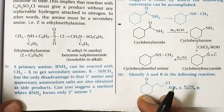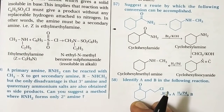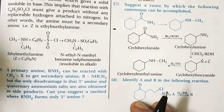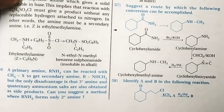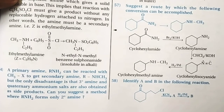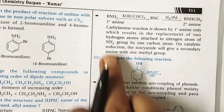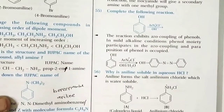Question 54: A primary amine RNH2 reacts with CH3X to give secondary amines RNHCH3, but the disadvantage is that tertiary amines and quaternary ammonium salts are also obtained as side products. To get only secondary amines, primary amines can react with chloroform in the presence of alcoholic KOH to form an isocyanate, which upon catalytic reduction gives only the secondary amine.